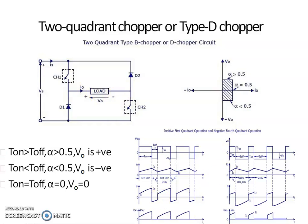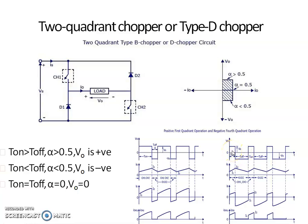The waveforms of source voltage, chopper currents ICH1 and ICH2 are shown in the figure. When CH1 and CH2 are on, the current direction is through CH1, through the load, through CH2, and back to the source — current and voltage are both positive. When CH1 and CH2 are off, the output voltage equals minus Vs but current direction remains positive. By varying the turn-on time, the average output voltage can be varied. If turn-on time is greater than turn-off time, average output voltage is positive; if less, it is negative. Type D chopper provides first and fourth quadrant operation.